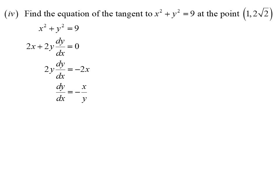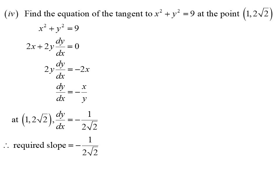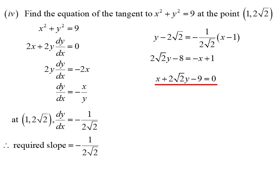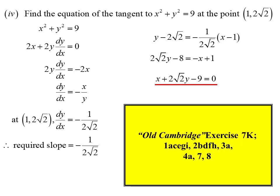Substituting in both the x and y values gives a slope of −1/(2√2). Using the point-slope formula and rearranging, the tangent in general form is x + 2√2·y − 9 = 0. That's actually a little quicker than making y the subject and working with that. So this is the idea of implicit differentiation. The exercise is from the old textbook since there isn't one in our current textbook, so have a go at some of them and try implicit differentiation.